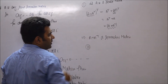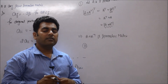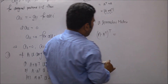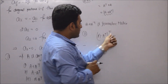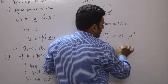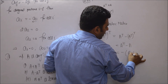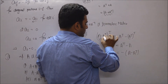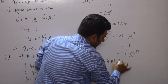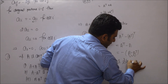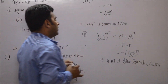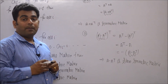Second: A − Aᵀ is a skew symmetric matrix. Taking the transpose of (A − Aᵀ): this equals Aᵀ − (Aᵀ)ᵀ = Aᵀ − A = −(A − Aᵀ). Since the transpose equals the negative of itself, A − Aᵀ is a skew symmetric matrix.